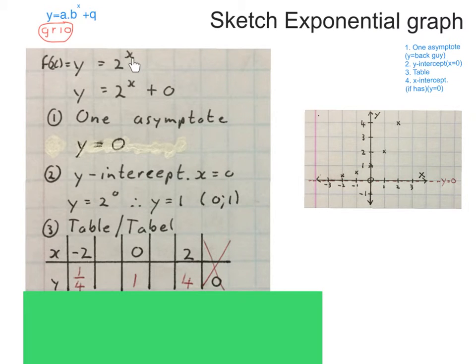You take that minus 2, plug it with your calculator in the exponent. You're going to get the answer a quarter. I'm going to take the naught, plug it in there. We've already done that. Gives you a 1. Take a 2, put the x in there and get a 4. Then I plot these three points.